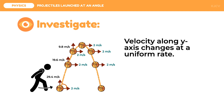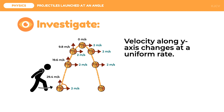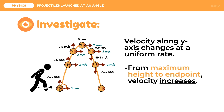Once it reaches the maximum height, it will experience a temporary stop as stated by the 0 meter per second velocity. This means that at maximum height, the velocity is 0. Lastly, the projectile moves downward. These data show that the ball experiences a constant downward change in velocity, which is also equivalent to the acceleration due to gravity. This means that from the maximum height to the end point, the velocity along the y-axis increases.